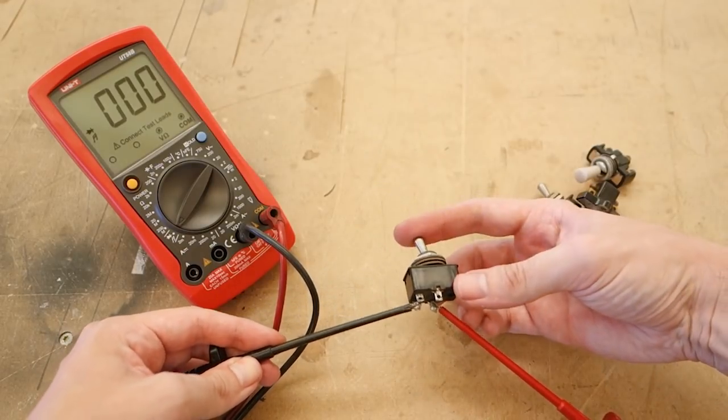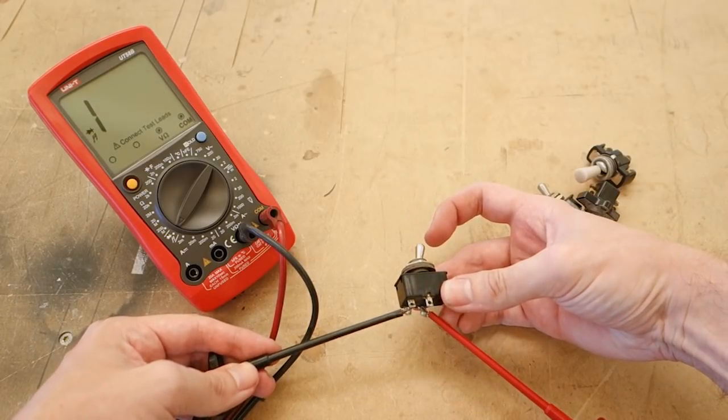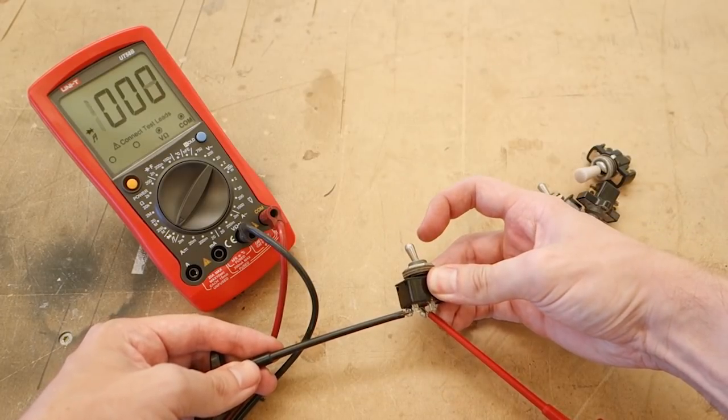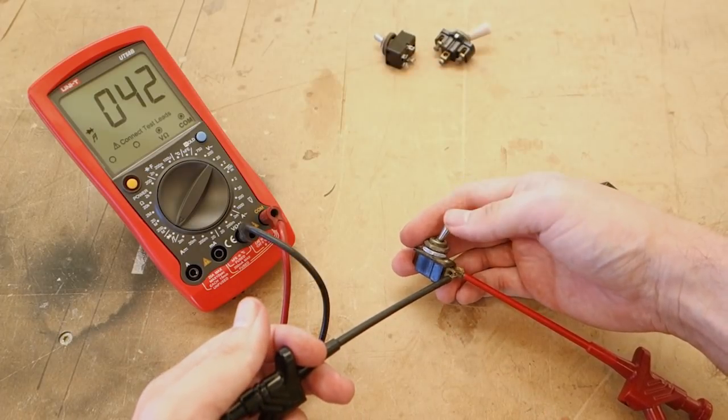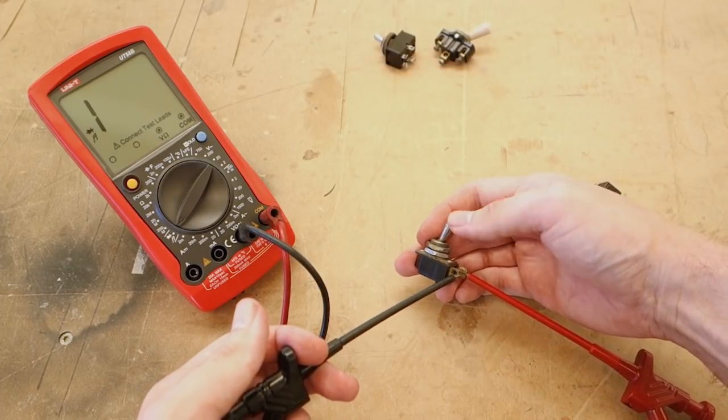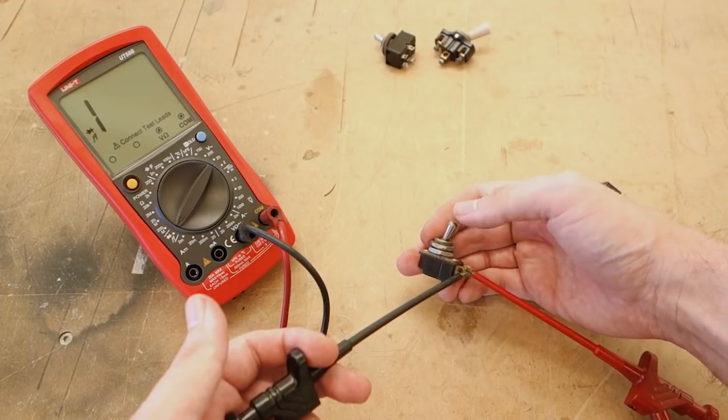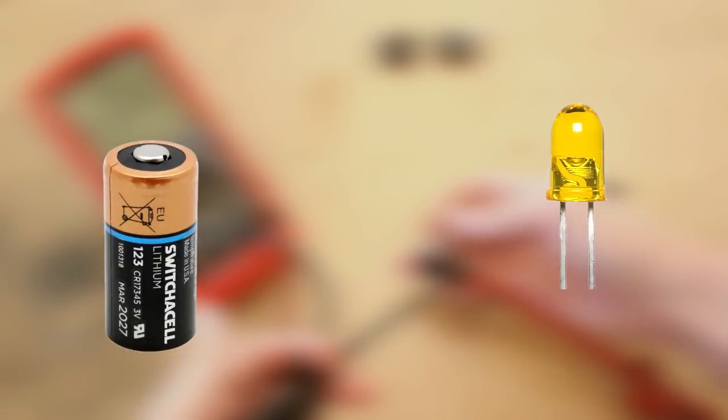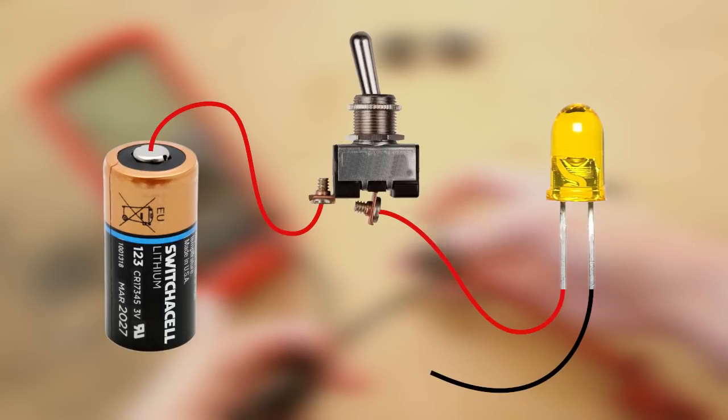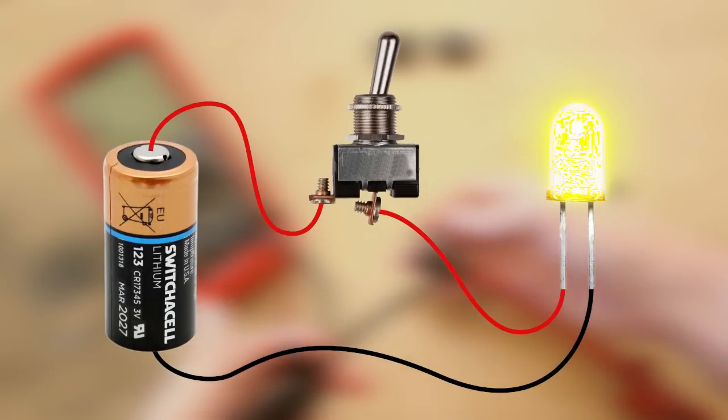As you can see, and maybe here, all the switches work at least to some degree. Though, some connections are intermittent, which shows there is definitely some gunk or corrosion inside the switch. If you don't have a multimeter, you can hook up a battery and an LED in series with the switch, and see if the LED lights up or not when flipping the switch.